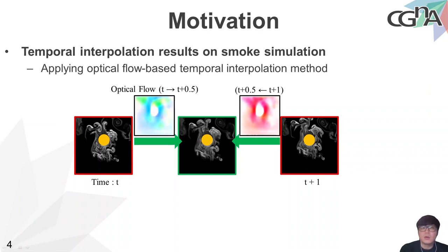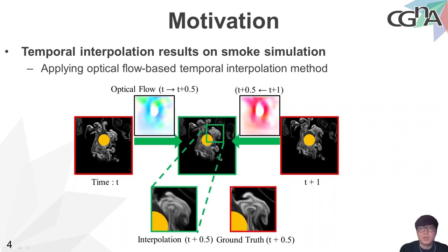As you may know, research on temporal interpolation in computer vision for general videos has been mainly conducted, and various temporal interpolation methods using deep neural networks have been proposed. However, problems arise when applying previous temporal interpolation methods to smoke frames, because the contours of smoke flows are frequently deformed even in a small time step. As a result, we cannot compute the optical flow information exactly between two input smoke frames, and the interpolation results can be inaccurate and blurry.